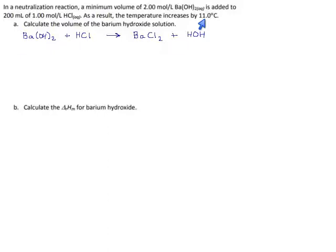I've written out the reaction already to save a little bit of time, and we must balance it before we go on. This side has two hydroxides on it, so we'll double our water. That means we have two hydrogens, so we double our hydrochloric acid, and that means we have two chlorides, which is fine. So there it is balanced.